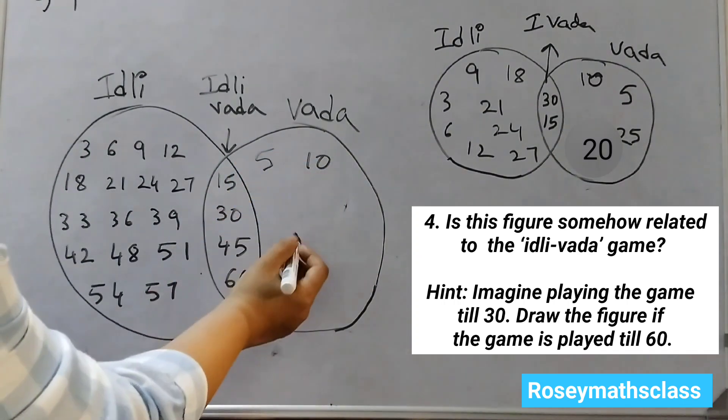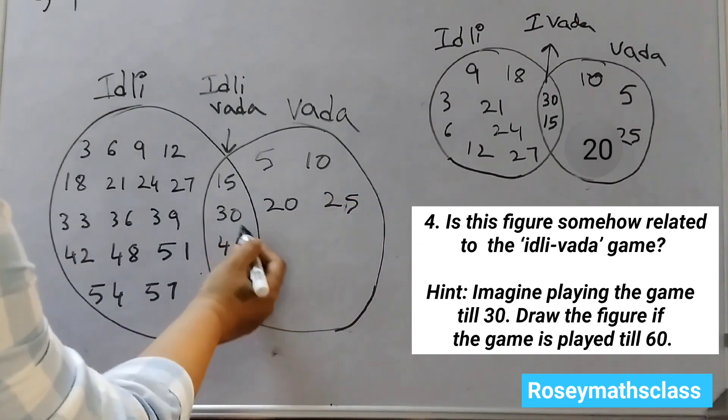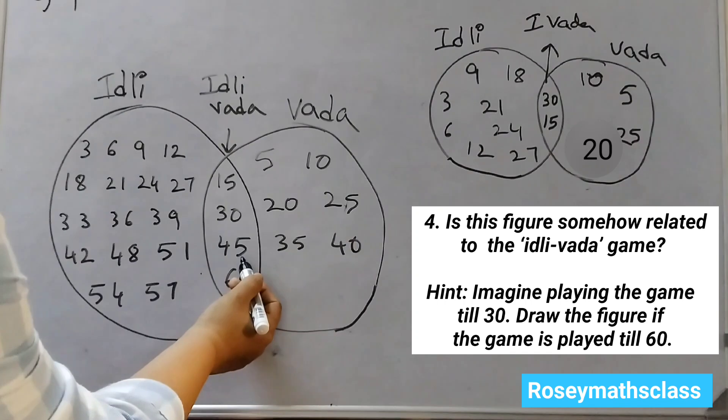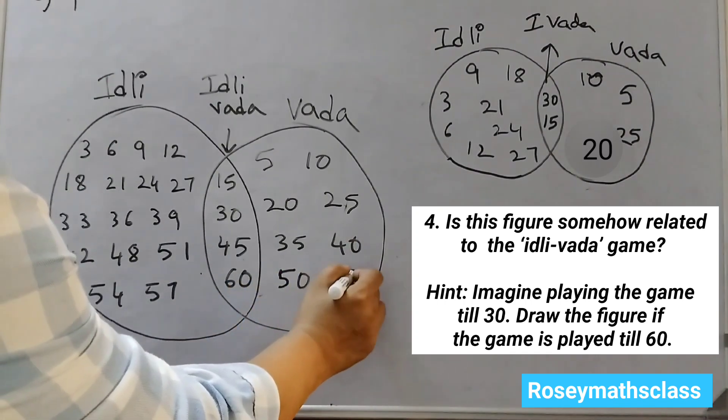5, 10, 15 is already there. 20, 25, 30, 35, 40. 45 is here. 50, 55.